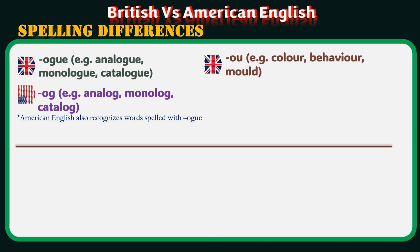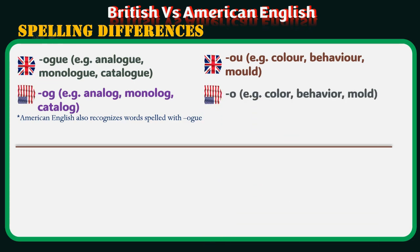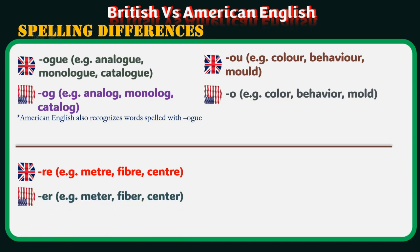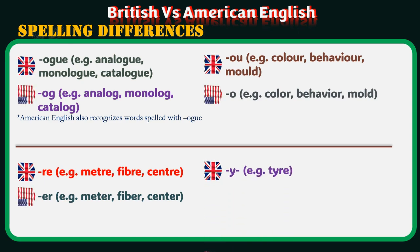British ends with OUR — examples: colour, behaviour, mould. American ends with OR — examples: color, behavior, mold. British ends with RE — examples: metre, fibre, centre. American ends with ER — examples: meter, fiber, center. British ends with Y — example: tyre. American ends with I — example: tire.